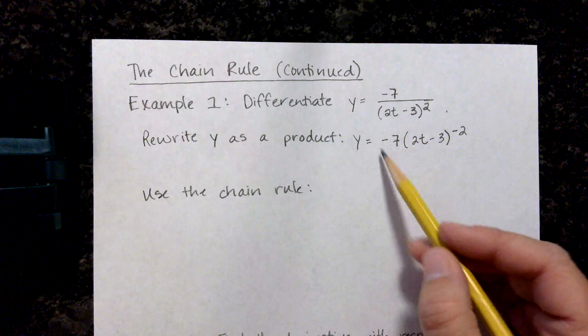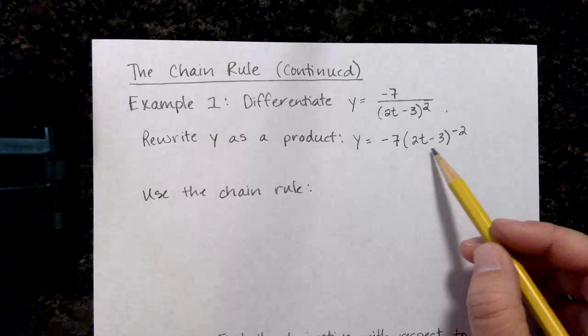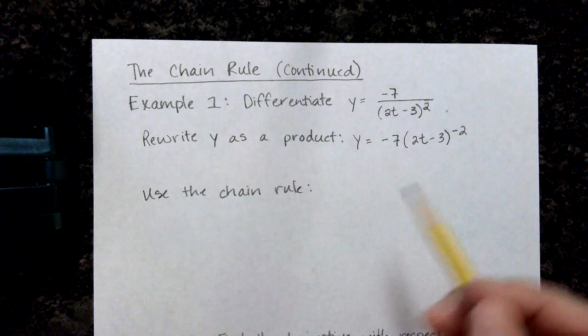Now because we have a constant and then a composite function, 2t minus 3 to the negative 2, we can use the chain rule.